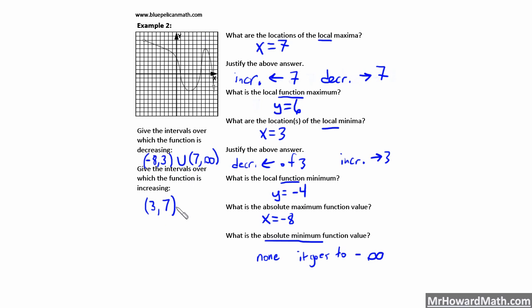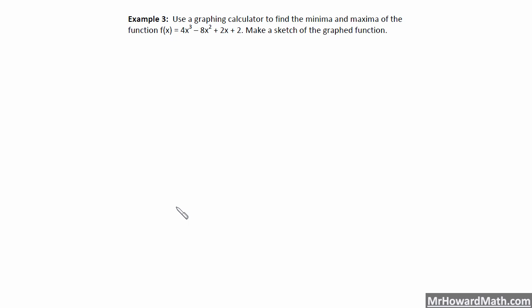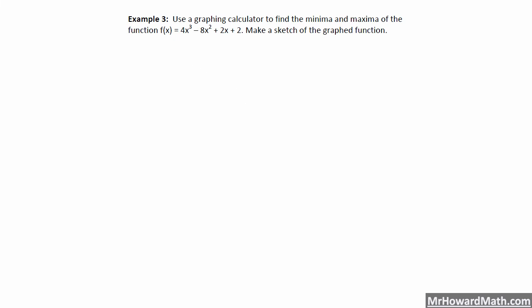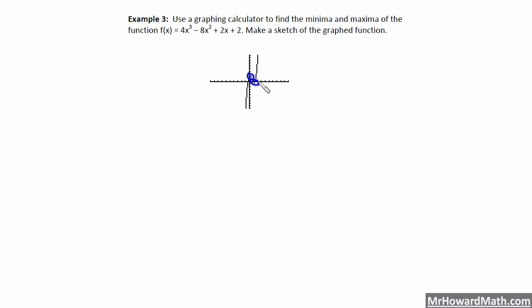Let's look at one more example and this video will be done. Last example, Example 3: use a graphing calculator to find the minima and maxima of the function f(x) = 4x³ − 8x² + 2x + 2. Make a sketch of the graphed function. We need to pull up our graphing calculator. I've gone ahead and put the function in, and we graph that. It is a cubic — it's got a cubic shape. We're concerned with this little area right here and then this little area right here where we're turning — increasing, then turning to decreasing, then turning and increasing again. Those are the two points we need to find.